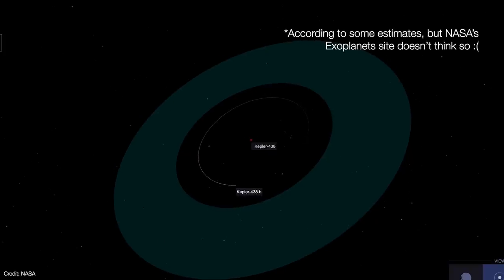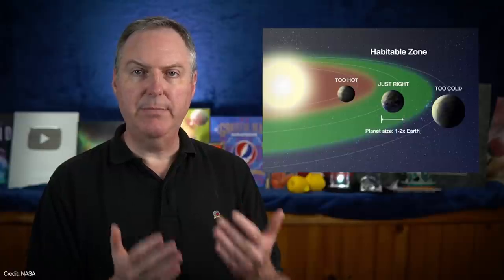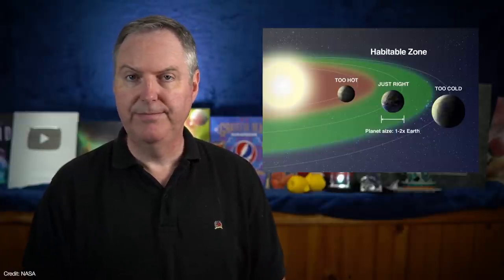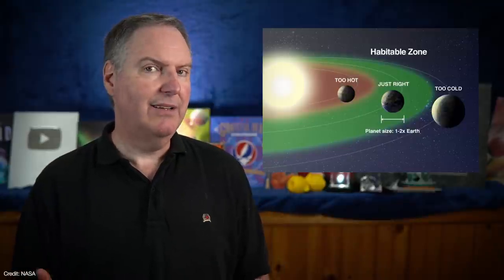Now all that really means is that the planet orbits at a distance where the temperatures would allow water to flow as a liquid on the surface. It doesn't mean that the planet really has liquid water, let alone a civilization that's trying to communicate with us.